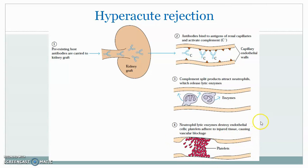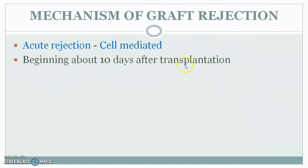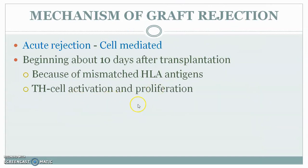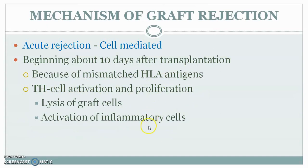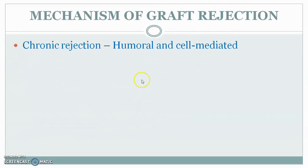Acute rejection is a cell-mediated rejection beginning about 10 days after transplantation, caused by mismatched HLA antigens. Th cell activation and proliferation are responsible. It is similar to hyperacute rejection but occurs a few days after transplantation. Th cells cause lysis of graft cells and activation of inflammation, with no involvement of antibodies.